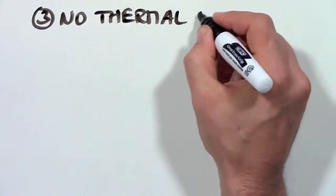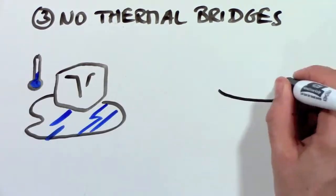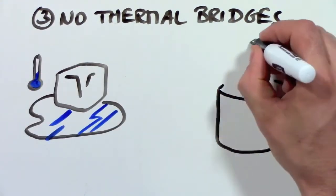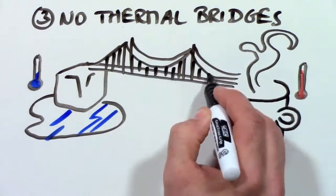3. No thermal bridges. A thermal bridge is like a road for heating energy in which warmth can travel right through your walls. As a matter of fact, most of our houses have thermal highways in our walls where heat can easily travel to the outside.